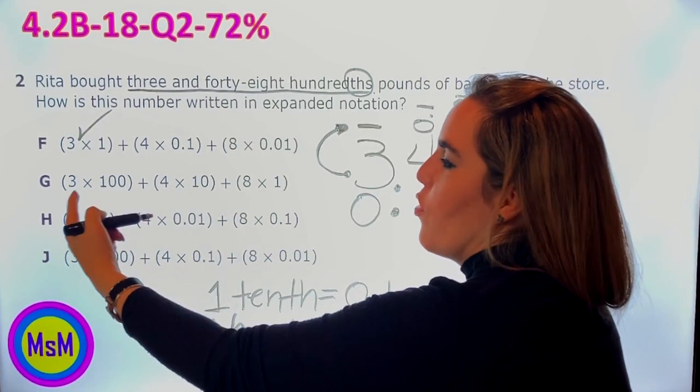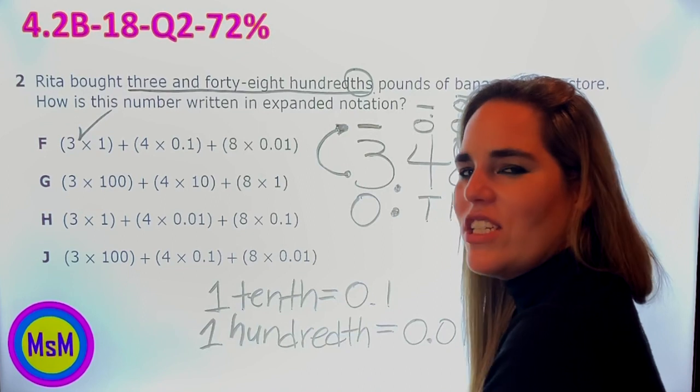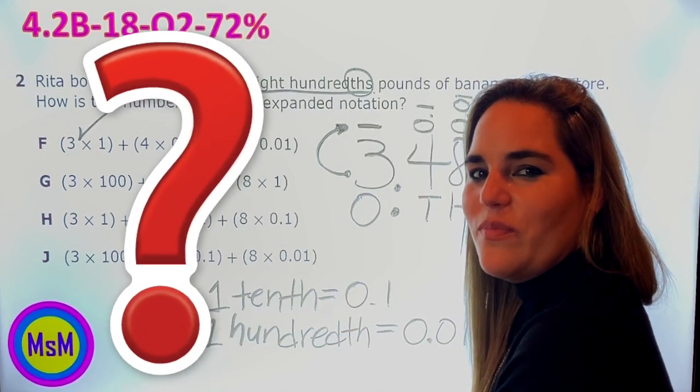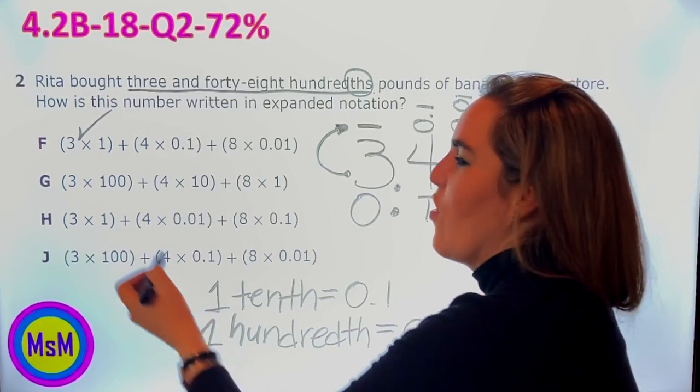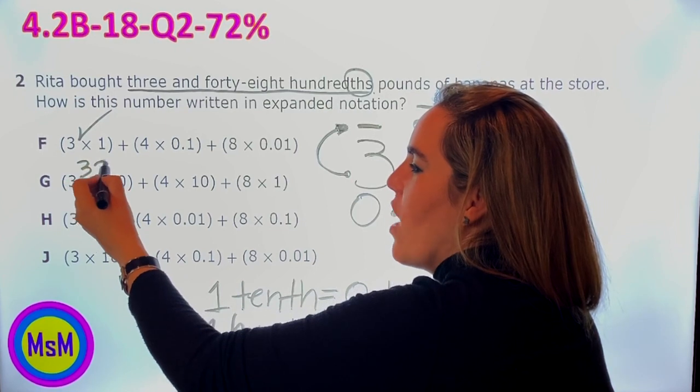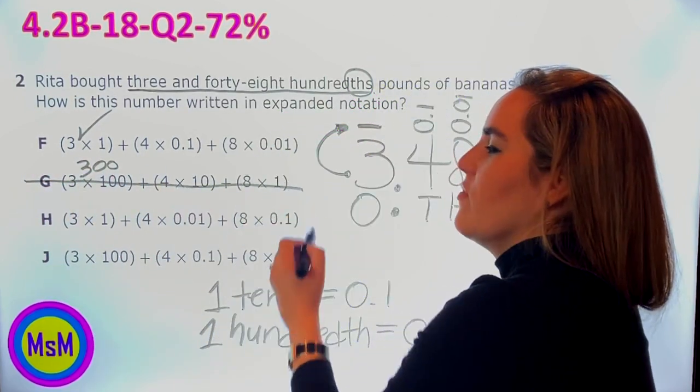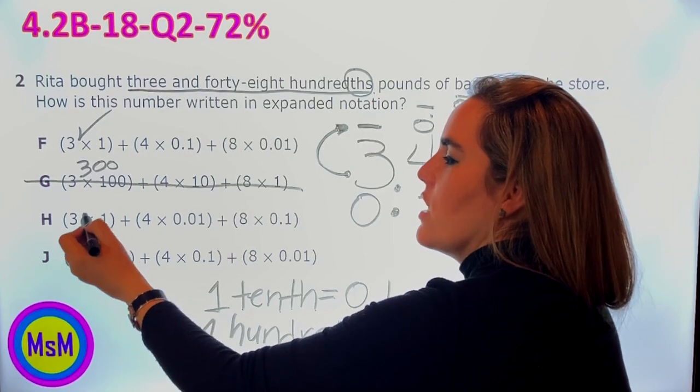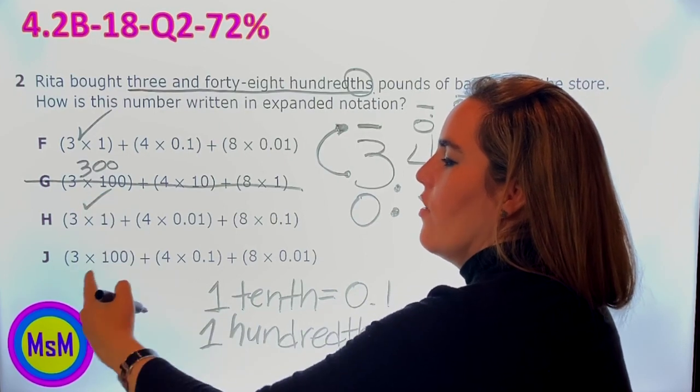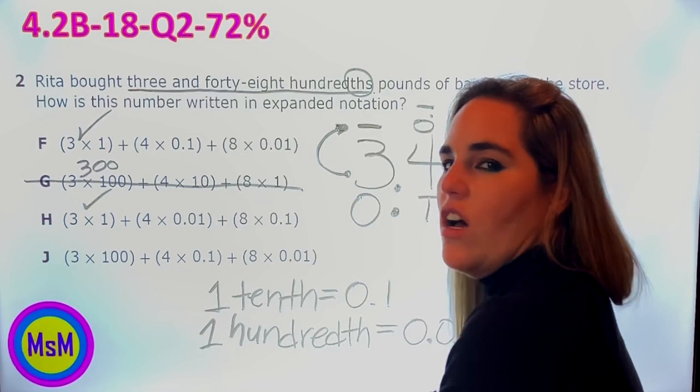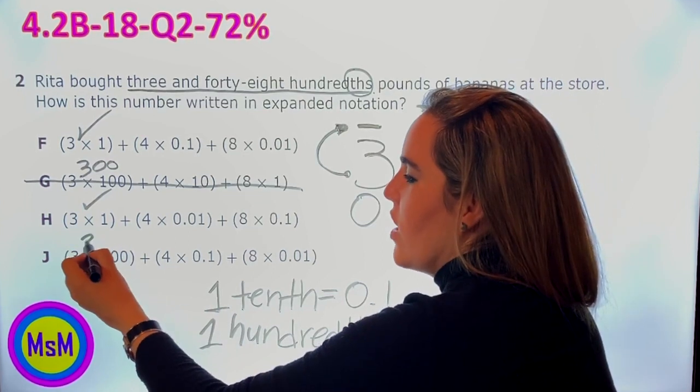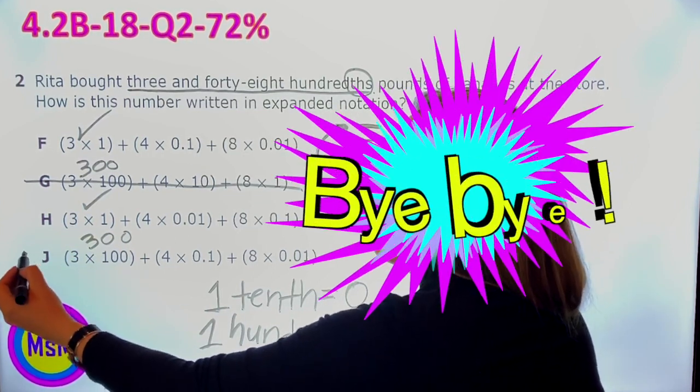On G, we have 3 times 100. How much is that, boys and girls? You're right, 300. So what do we say? No.